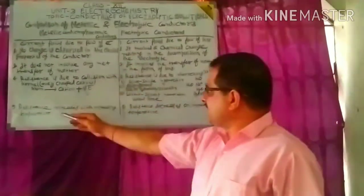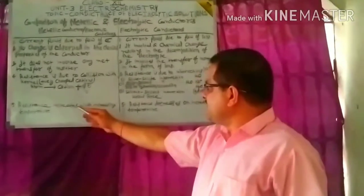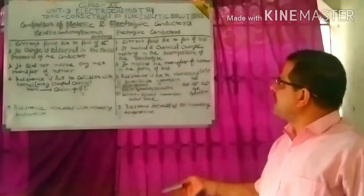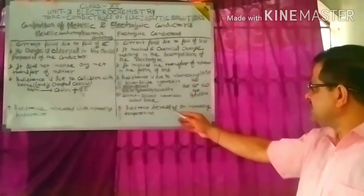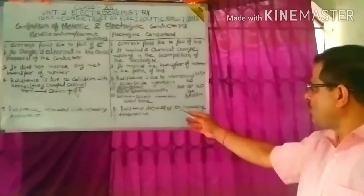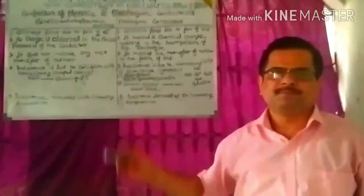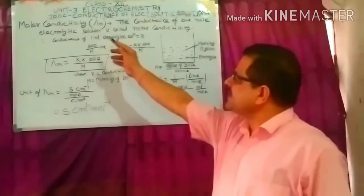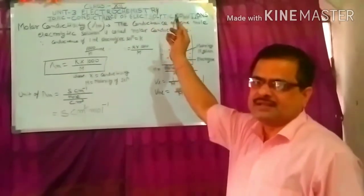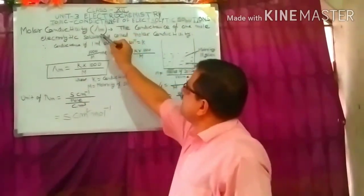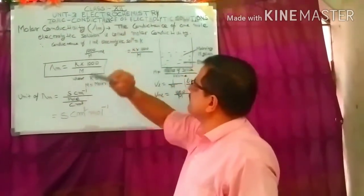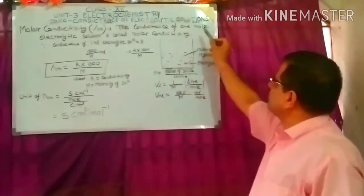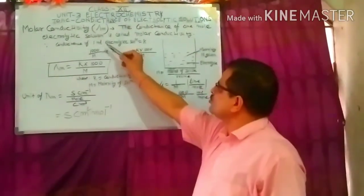In metallic conductors, resistance increases with increasing temperature. But in electrolytic conductors, resistance decreases with increasing temperature. Now let us consider molar conductivity, which is represented by λM.